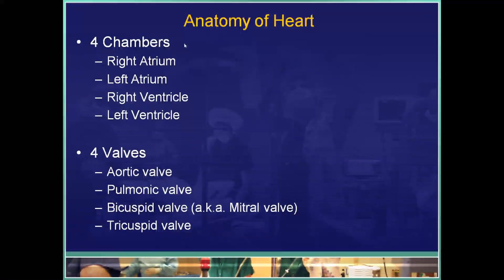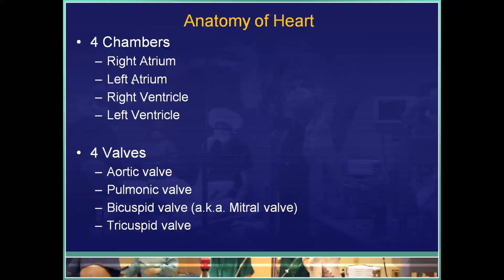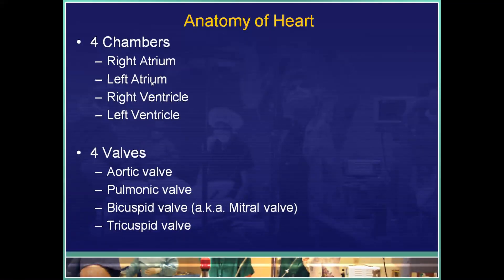With the anatomy of the heart, there are four chambers: the right atrium and the left atrium, which are the top two chambers, or the superior most chambers, and then the right ventricle and left ventricle, which are the bottom chambers. In between the atria and ventricles there are valves. On the left side there's the bicuspid valve, also known as the mitral valve, and on the right side there's the tricuspid valve.